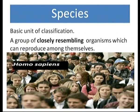Species is the basic unit of classification. It is a group of closely resembling organisms which can reproduce among themselves. For example, all human beings belong to the same species: Homo sapiens.